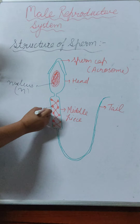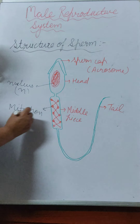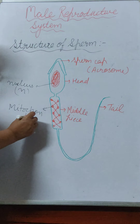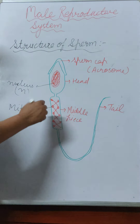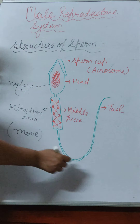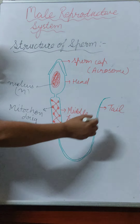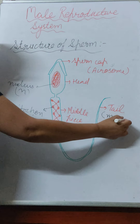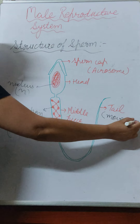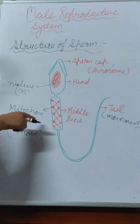The next part is the middle piece, which contains numerous mitochondria. These mitochondria produce energy, and that energy is used by the sperm to move. The next part is the tail, which is long and helps in movement.